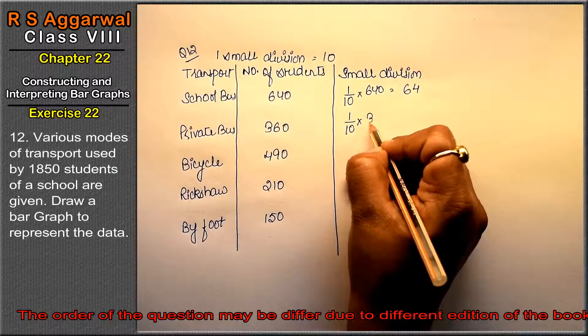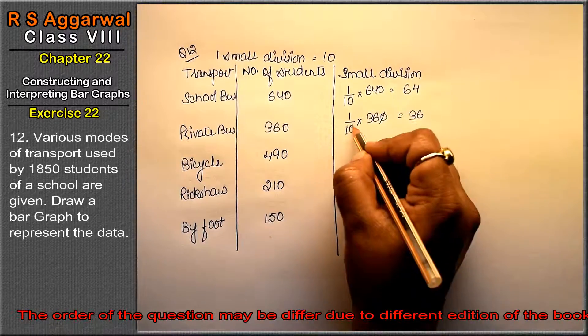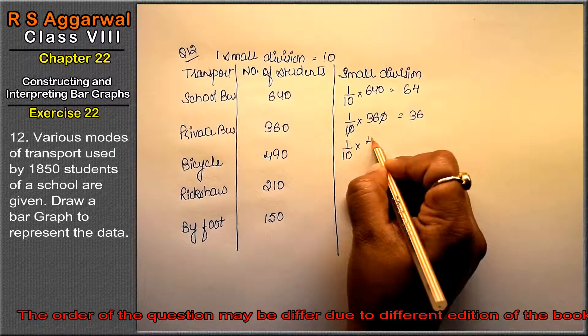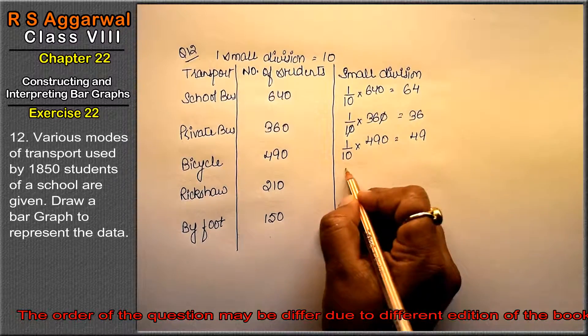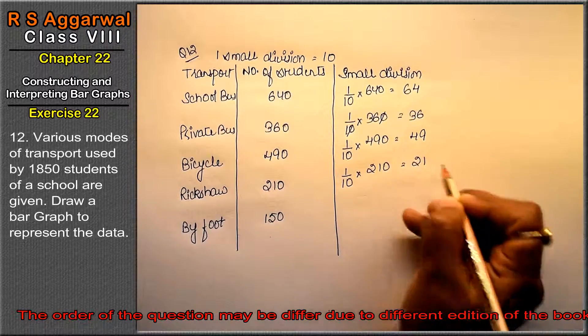One upon 10 into 360 equals to 36. Kyunki yaha zero se zero cancel ho gaya. One upon 10 into 490 equals to 49. One upon 10 into 210 equals to 21. One upon 10 into 150 equals to 15.